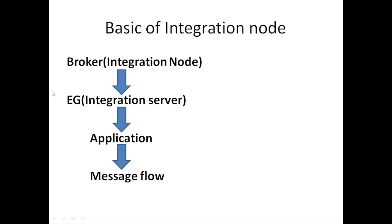So once we have an integration node, under the integration node we can have multiple servers. Under each server we can have multiple applications, and under each application we can have multiple message flows. In the later section of this series I am going to create everything from scratch — the integration node, the integration server, the application, and the message flow — so you don't need to worry about it. Here I am giving a brief overview so that you understand what these terms mean.